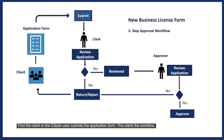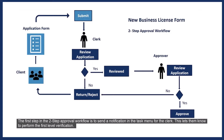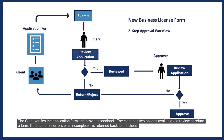The first step in the two-step approval workflow is to send a notification in the task menu for the clerk, letting them know to perform the first level verification. The clerk verifies the application form and provides feedback, with two options available: to review or return the form. If the form has errors or is incomplete, it is returned to the client, who is then able to edit the form and resubmit it.